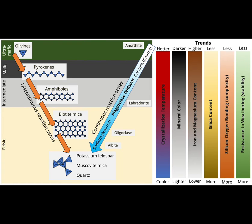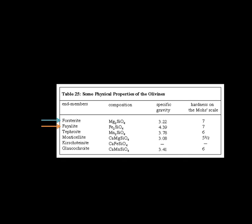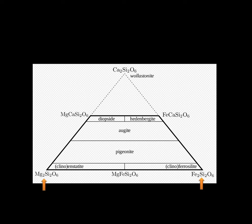Olivine has two end members: an iron-rich end member and a magnesium-rich end member. The magnesium-rich end member is called forsterite and the iron-rich end member is called fayalite. When cooling a magma, the magnesium-rich end member always crystallizes first, then the iron-rich end member. So forsterite crystallizes first and then fayalite. Similarly, for pyroxene, the magnesium-rich pyroxene — enstatite — forms first, followed by the iron-rich pyroxene — ferrosilite.